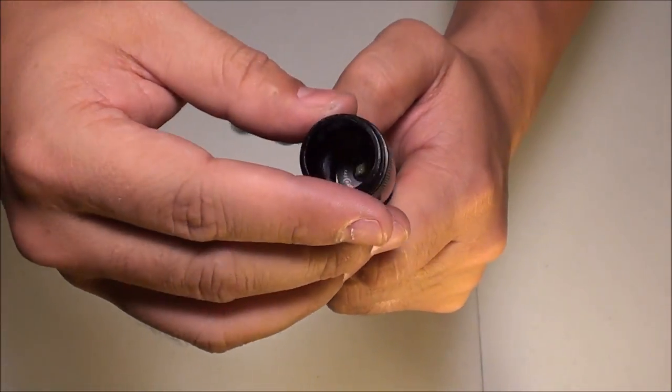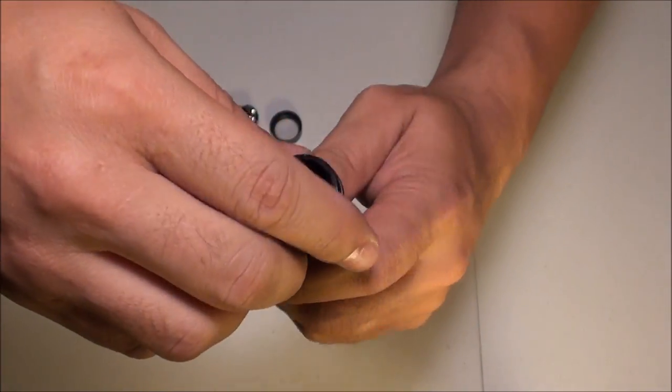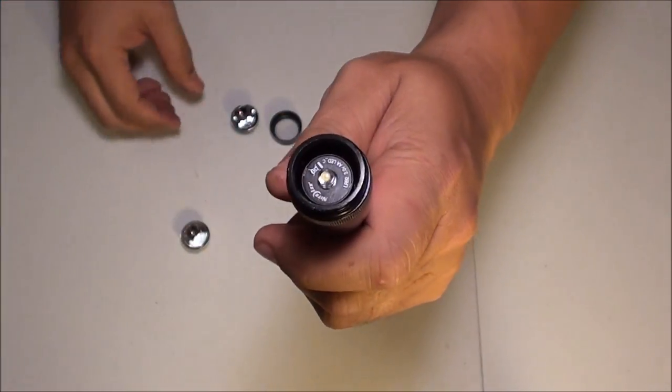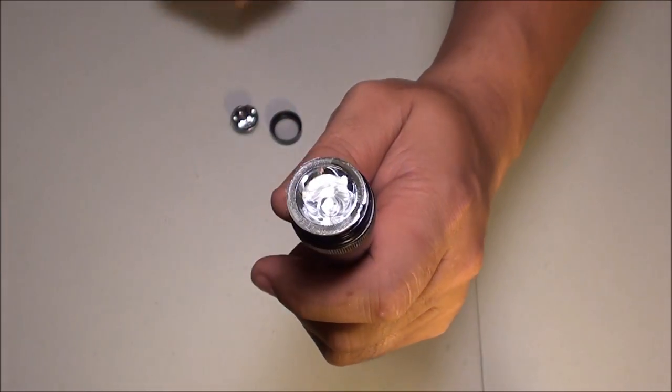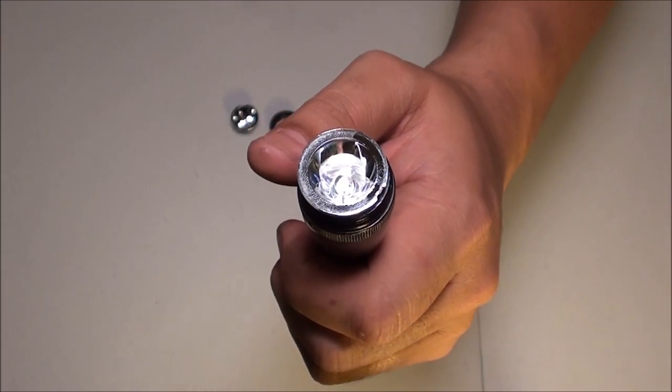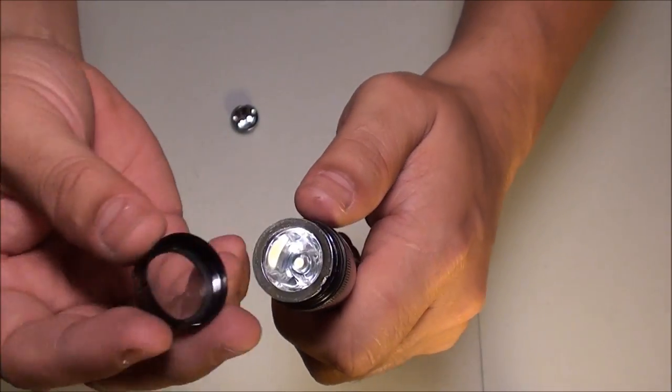Then you put your adjusting ring back on. Then you put your new larger reflecting cone on, because the LED bulb is a little bit larger. And then you put back on your bezel.